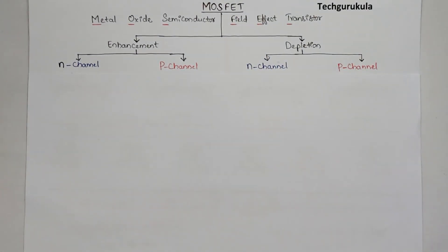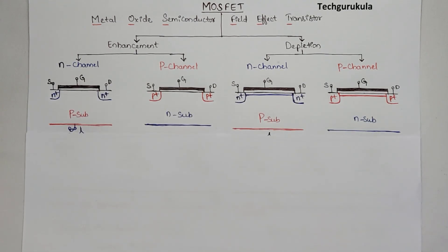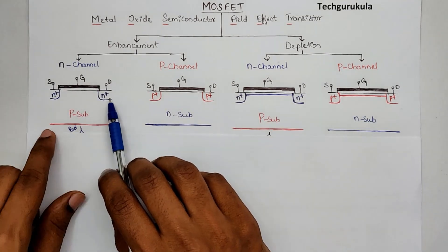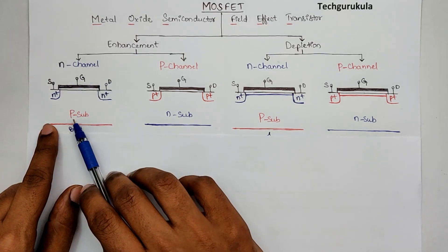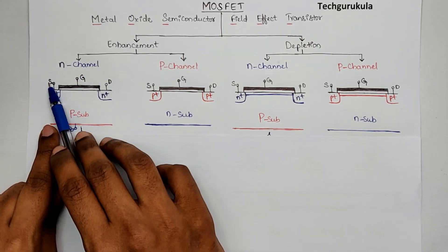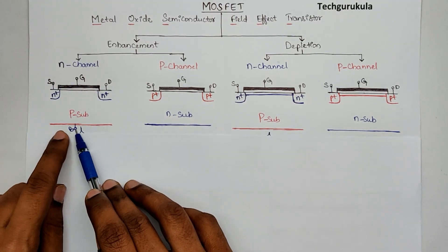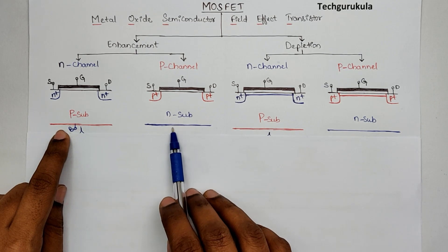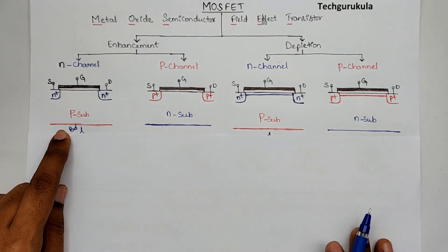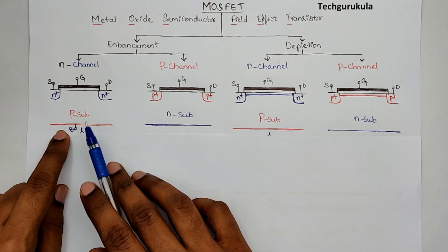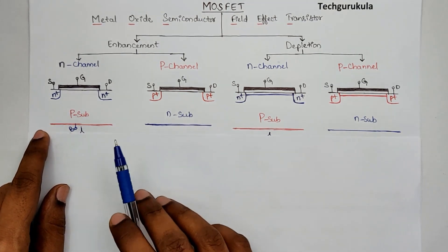If I show you the structures of these MOSFETs in a simple way, you have to always remember that MOSFETs are four-terminal devices. The terminals are: source, gate, drain, and bulk. I have intentionally not shown the fourth terminal — the bulk terminal — because most of the time as we go through this course we are not going to see the bulk terminal much, but you have to remember that MOSFET is a four-terminal device.